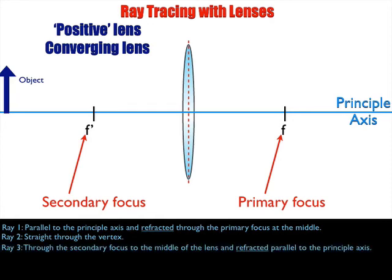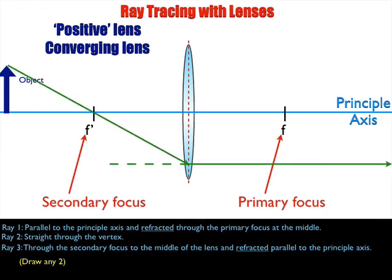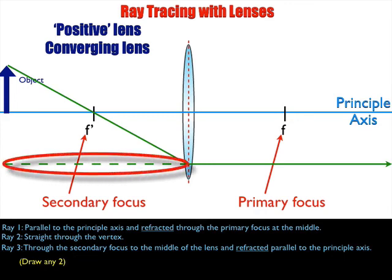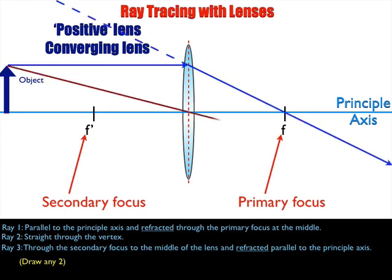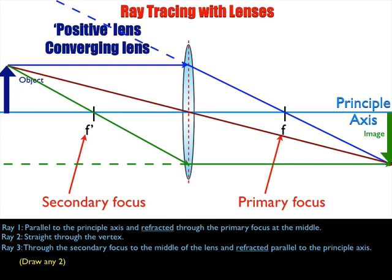The third ray goes through the secondary focus to the middle of the lens and then refracts parallel — it's the reverse of the first ray. I go through the secondary focus until I hit the vertical dotted line representing the lens, then go parallel. If the line goes beyond the width of my lens, I just extend the dotted line since it's an approximation. I also draw the virtual part of it. All three rays — parallel then through primary focus, through the vertex, and through secondary focus then parallel — all meet at one spot, and that one spot is the location of the tip of the image.